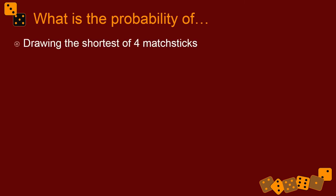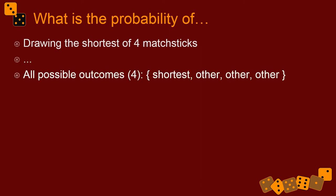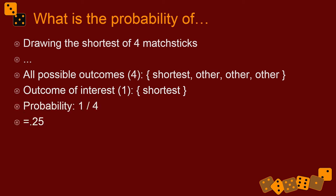Here's another one. What's the probability of drawing the shortest of four matchsticks? Pretty easy. All the possible outcomes. There's just one shortest matchstick, so I just wrote the other one. It says other, other, other. And the outcomes of interest. There's only one. It's the shortest one. So the probability is 1 in 4, 1 out of 4, 1 divided by 4. Those are all the same thing. It's 0.25.